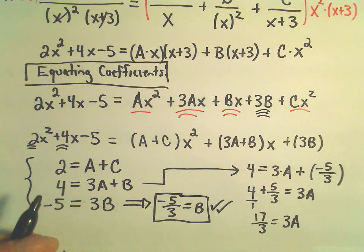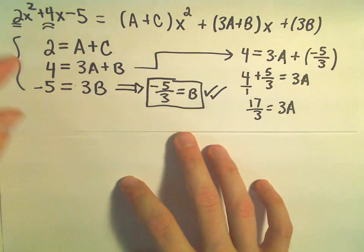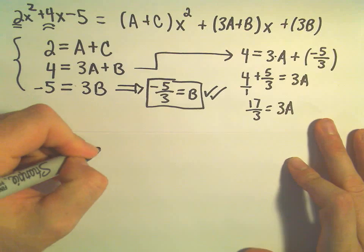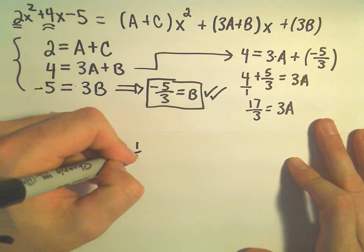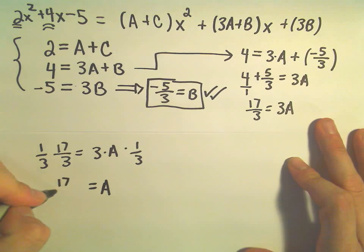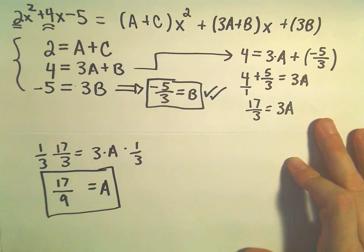And if we divide both sides by 3 or equivalently multiply both sides by 1 third. So we've got 17 over 3 equals 3A. If we multiply both sides by 1 third, we'll be left with A on the right. And it looks like we'll get 17 over 9 on the left. So now we know our A value.